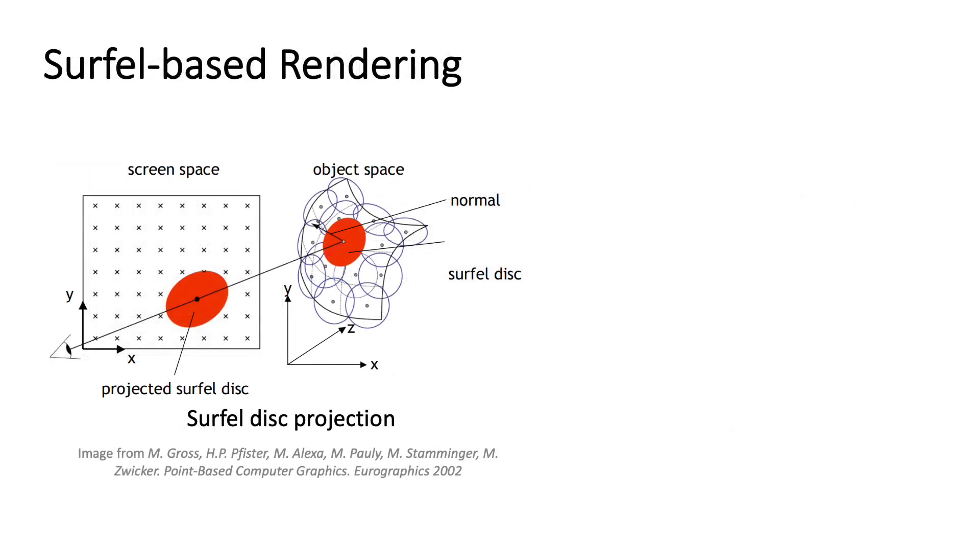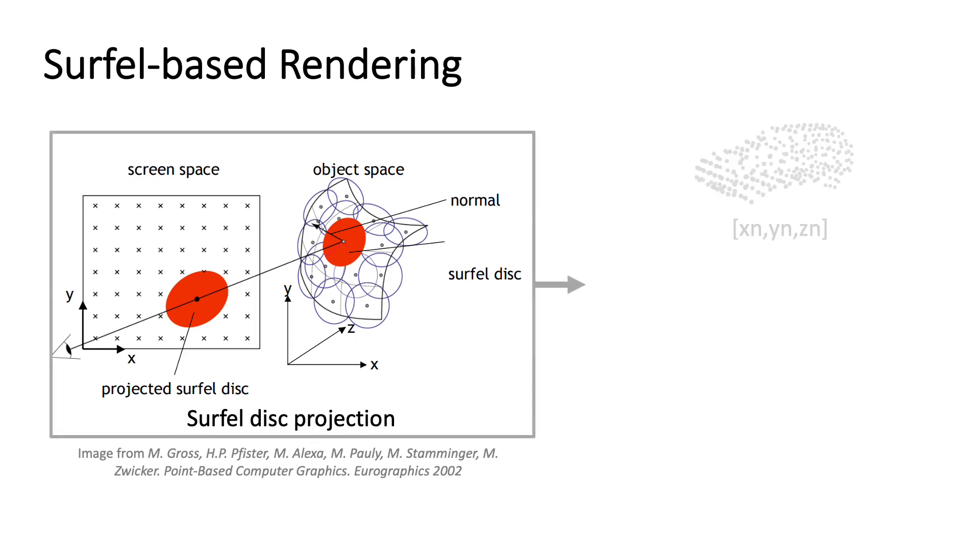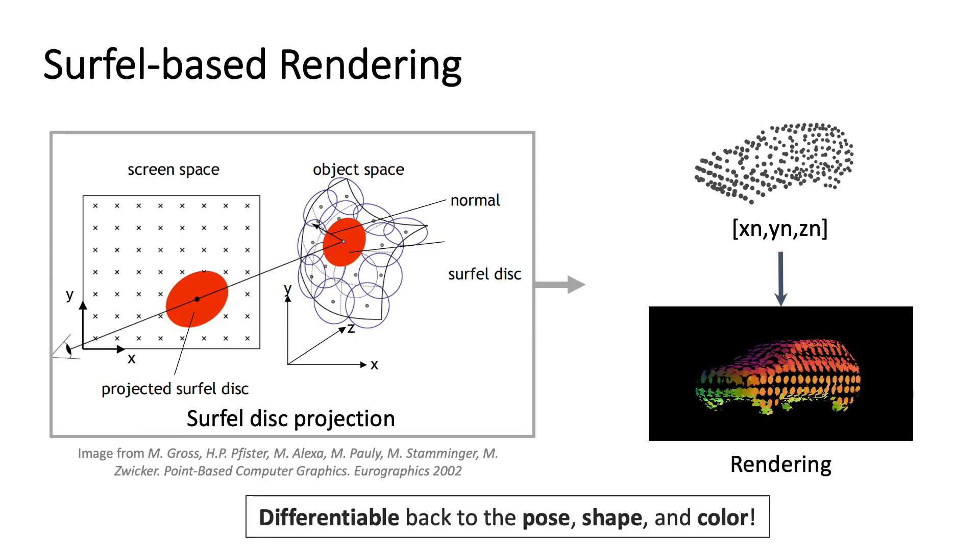The second component is a surface-based renderer. In the computer graphics domain, the concept of surface elements or surfels is a well-established alternative to connected triangular primitives. Our differentiable SDF representation yields oriented points and can be immediately used to render surface disks. The result accurately represents the geometry of the object and is differentiable with respect to the input.